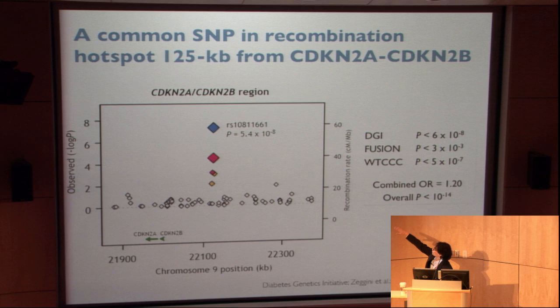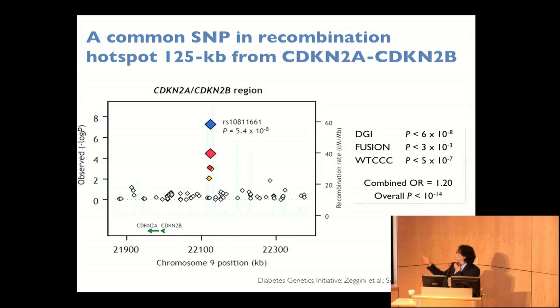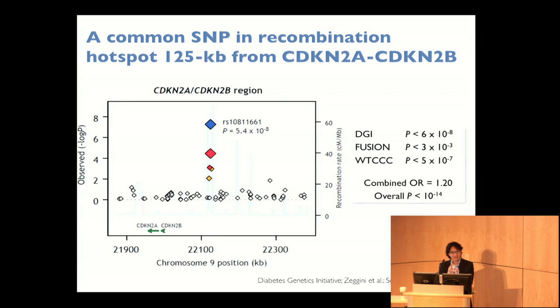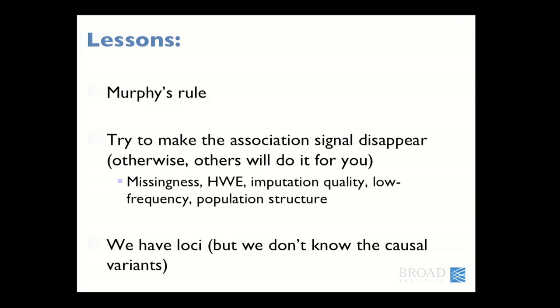Here's an example: individual studies — DGI, FUSION, Wellcome Trust — each hovering around genome-wide significance, but when you pool the data together through meta-analysis, the signal is overwhelmingly genome-wide significant. This is the general picture from GWAS: you need meta-analysis, and given how modest the effects are, investigators are forced to pool their data sets, which is a good thing. Meta-analysis has become a critical tool to make it all happen. On that note — look up Murphy's Rule on Wikipedia, because if you don't make your association signals disappear, others will do it for you. Thank you.